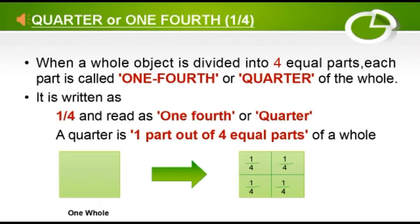Quarter, or one fourth: to understand quarter or one fourth, we will cut or divide a whole object into four equal parts. Here each part will be called one fourth or quarter of the whole. One whole square has been cut or divided into four equal parts, so each part will be called a quarter or one fourth. It is written as one by four and read as one fourth or quarter. Remember, a quarter is one part out of four equal parts of a whole.